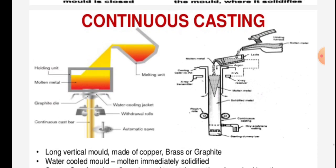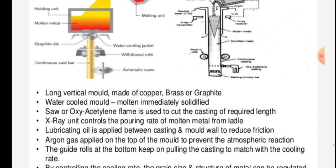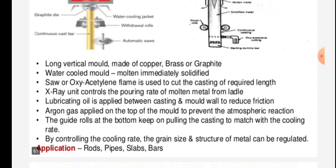The next topic is continuous casting, in which a long vertical mold made of copper, brass, and/or graphite is used. It is a water-cooled mold.